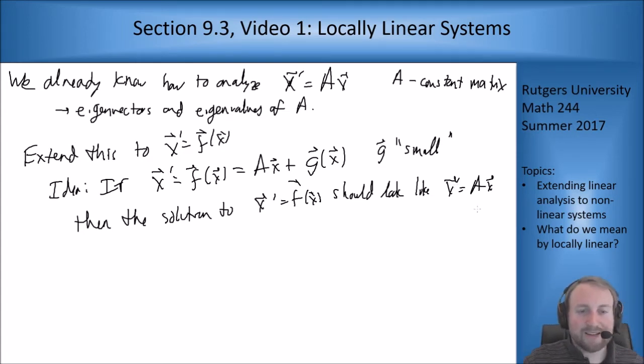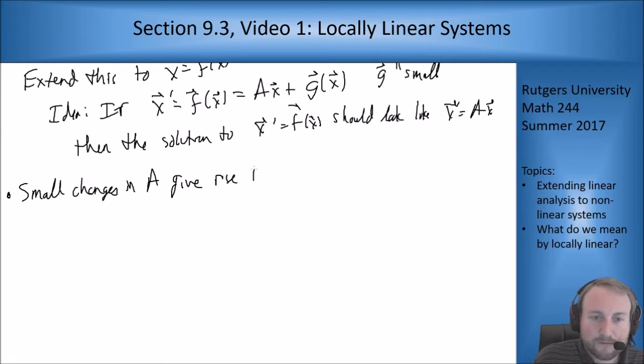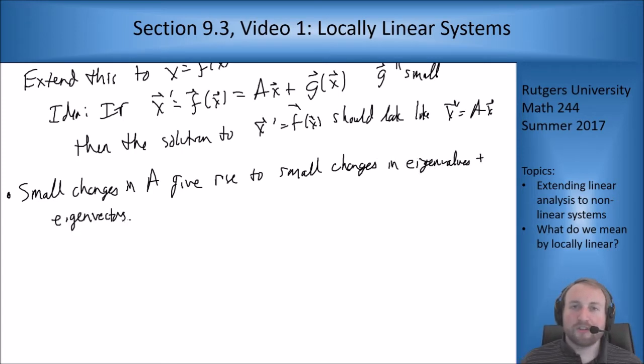The first point we want to make is that if we make small changes in A, then we make small changes in solution. Small changes in A give rise to small changes in eigenvalues and eigenvectors. What that means is if we're close to the matrix A we should be at, then in the linear case at least, we're only getting a small change in eigenvalues so it's not going to affect our solution too much.